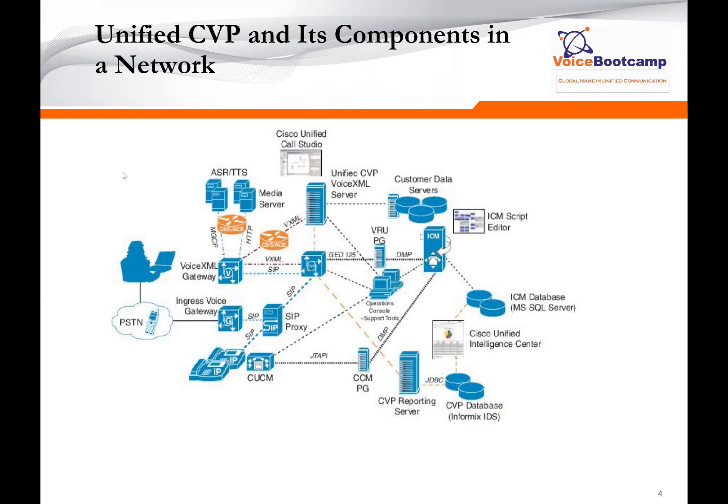This is a typical environment where CVP is involved. As you can see, CVP is at the center. CVP can communicate with a SIP proxy server for receiving and sending calls. It can act as both ingress and egress gateway. It communicates with the VXML gateway to process VXML applications by asking the gateway to execute certain scripts residing on a VXML server. The VXML server and CVP call server can be on the same server — a call server consists of VXML. CVP and VXML server can be the same server, but the gateway must be a Cisco IOS router or a virtual voice browser.